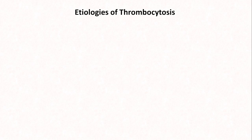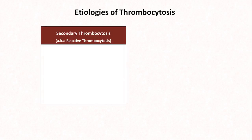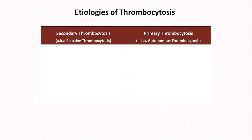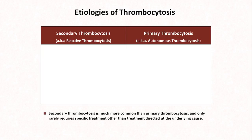The causes of thrombocytosis can be divided into two categories: secondary thrombocytosis, also known as reactive thrombocytosis, and primary thrombocytosis, also known as autonomous thrombocytosis. Primary thrombocytosis is a situation in which overproduction of platelets is a direct part of the central pathology. Secondary thrombocytosis is listed first to emphasize that it's much more common, though it only rarely requires specific treatment other than that directed at the underlying cause.